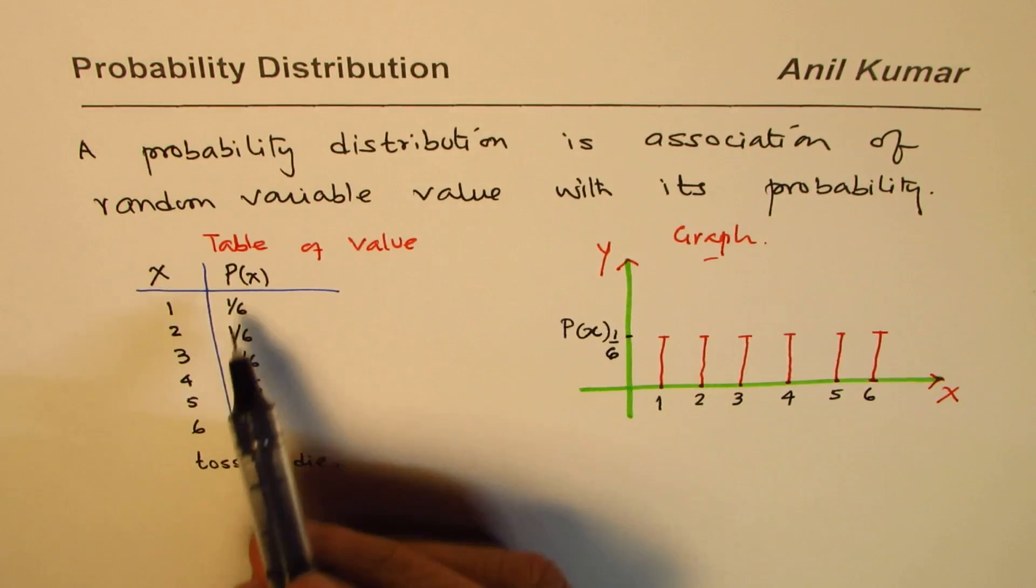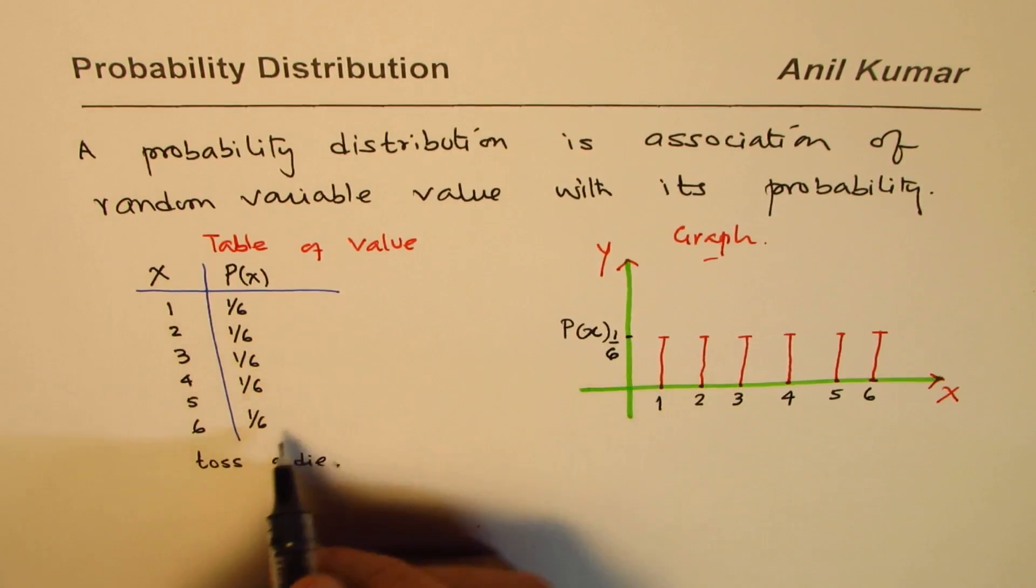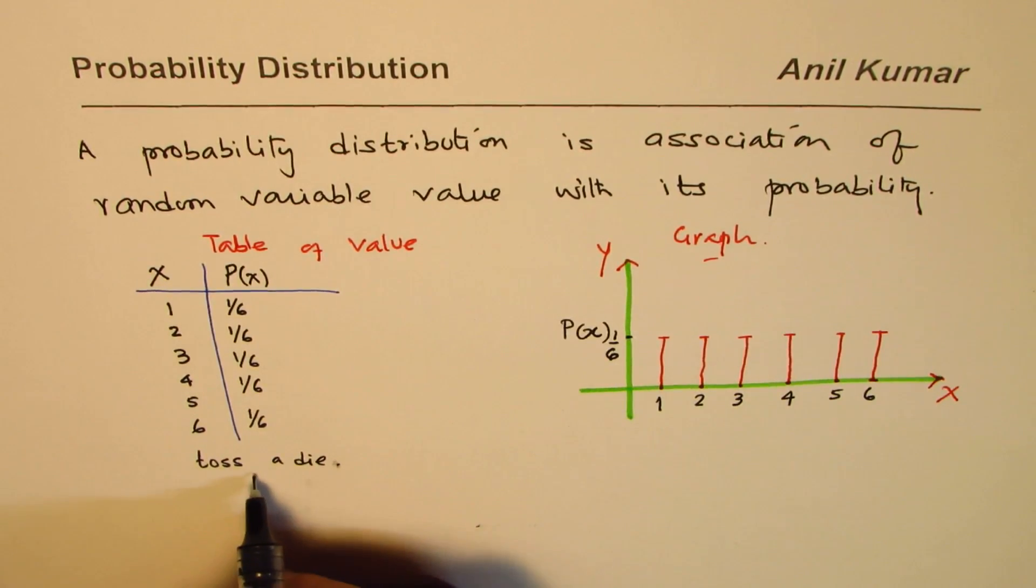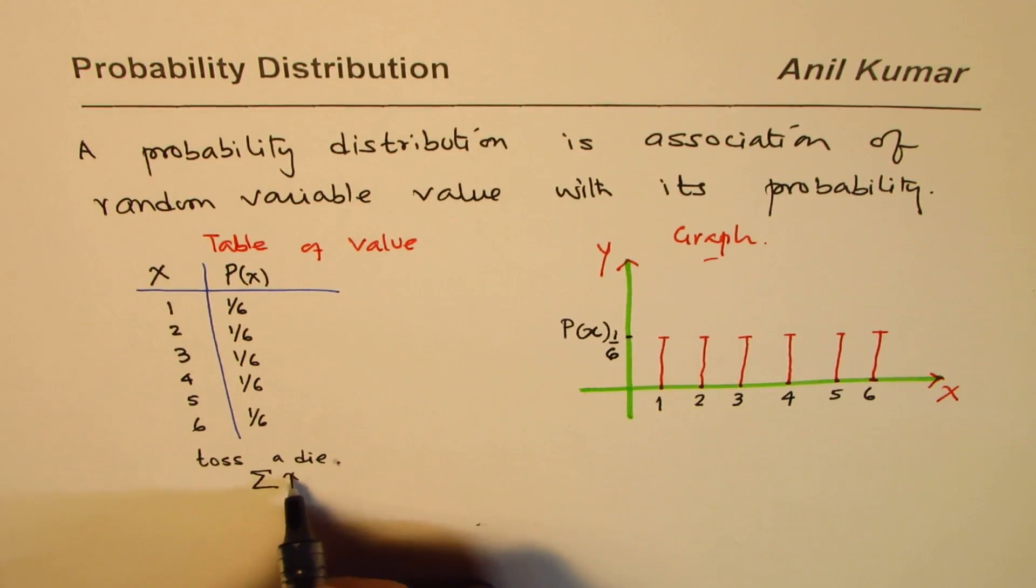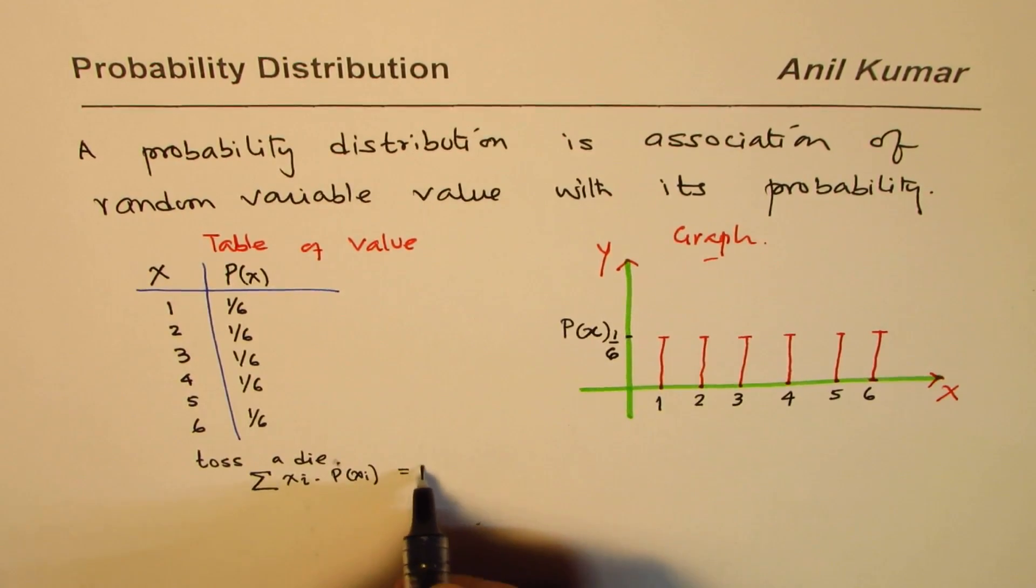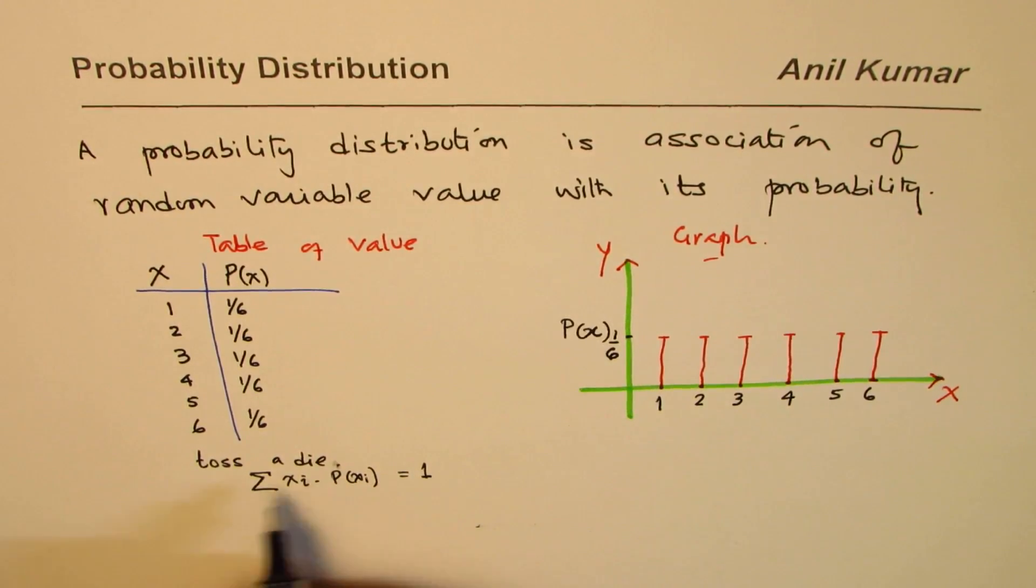Important thing here is, whenever you sum all the probabilities, it should always be equal to 1. So sum of all these probabilities, that is to say, xi times probability of each xi is always equals to 1.